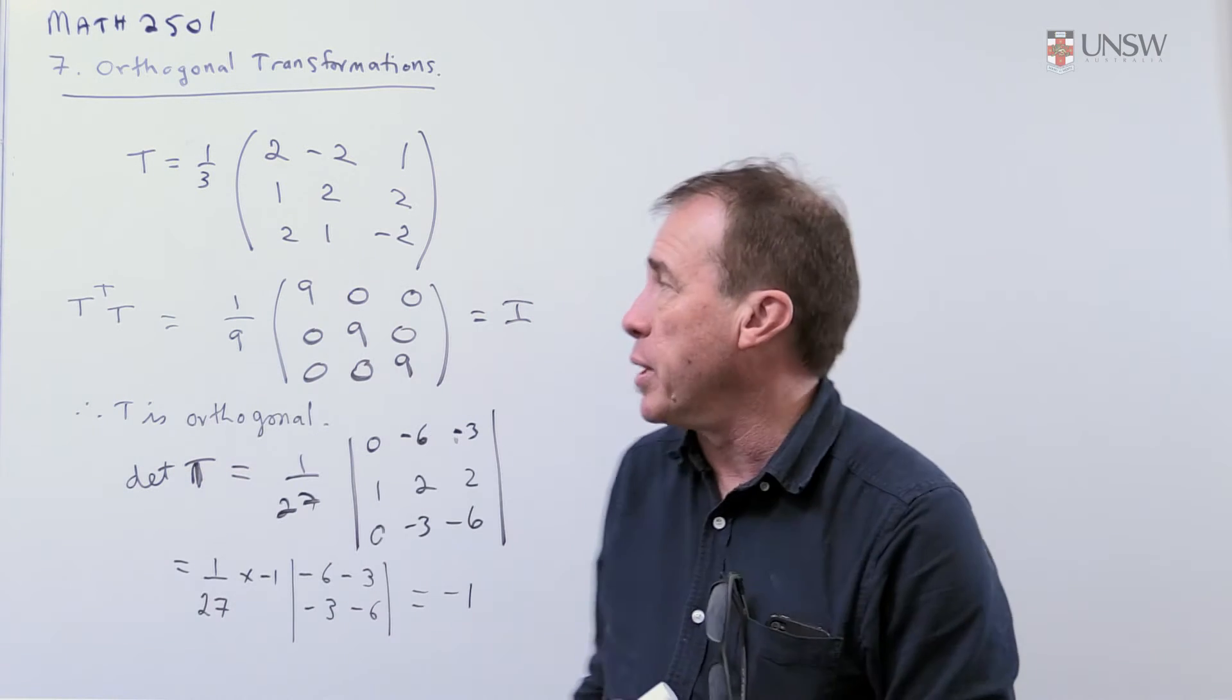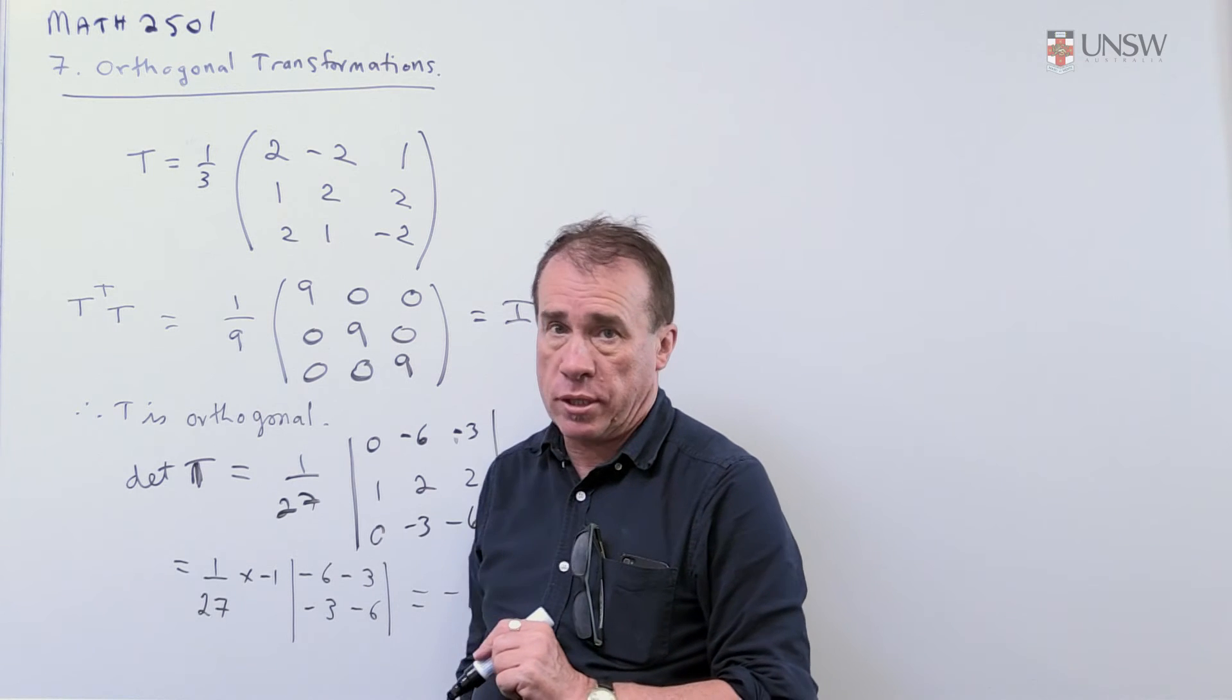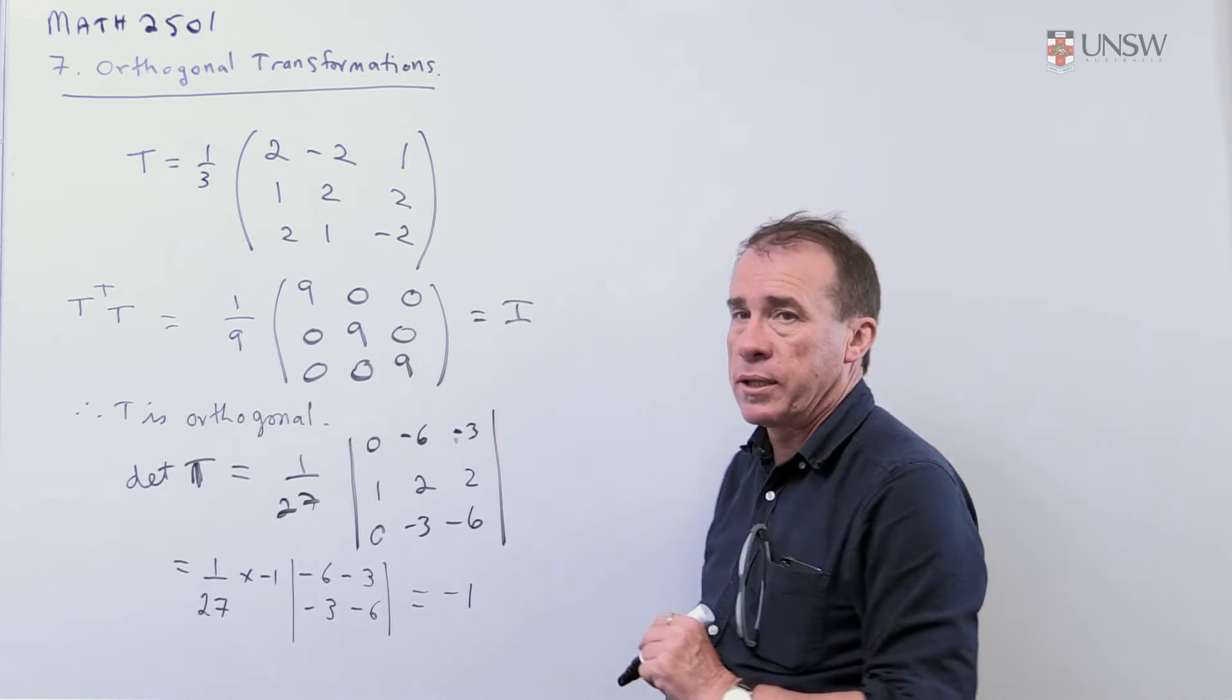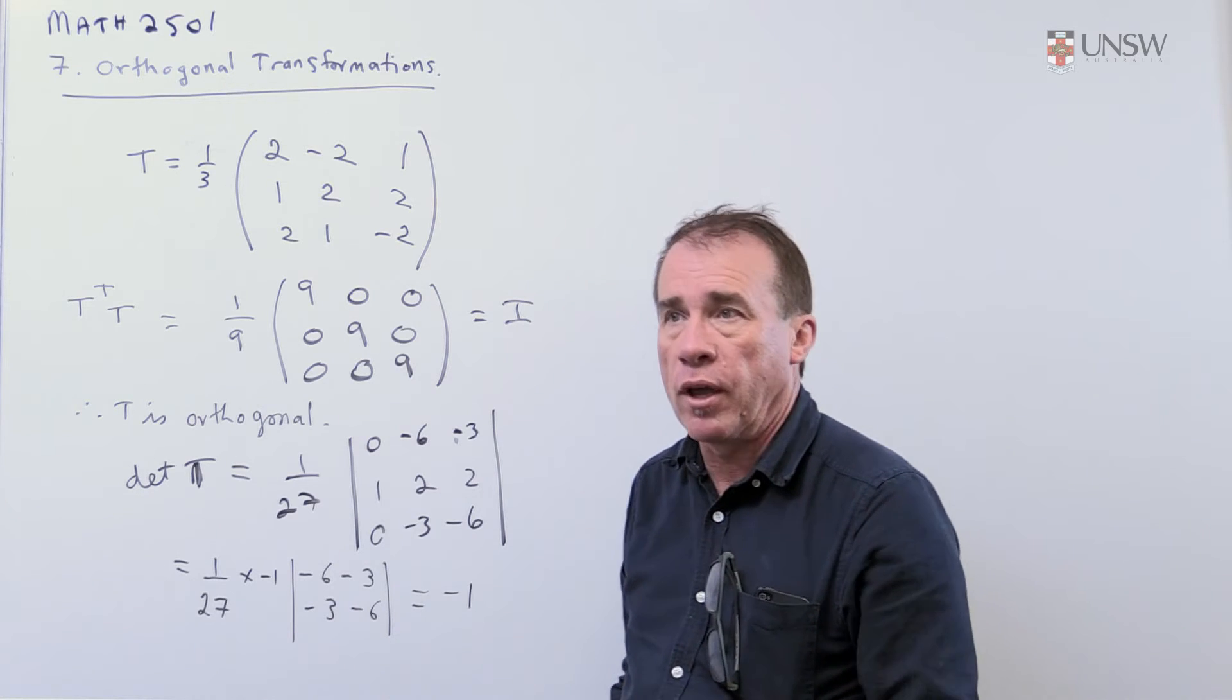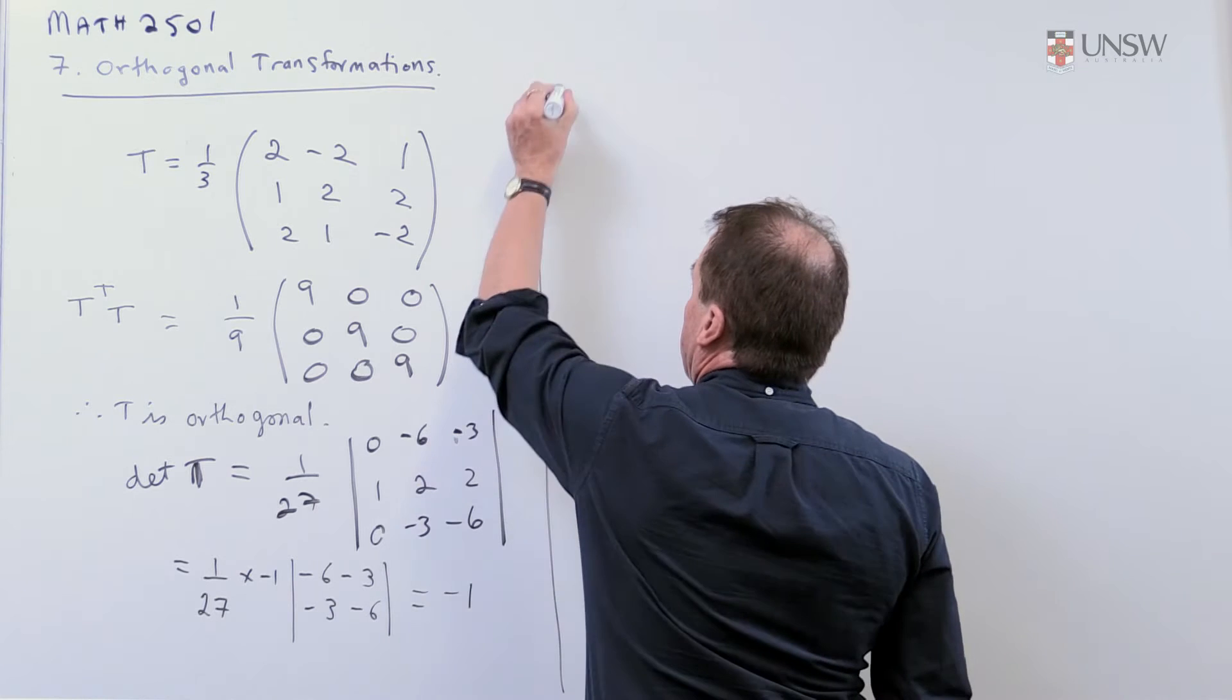If the determinant had been plus 1, then I know that this is a pure rotation. The fact that it's minus 1 tells me it's a reflection followed by a rotation.